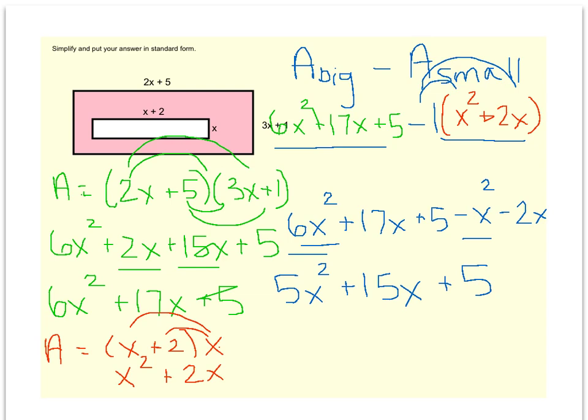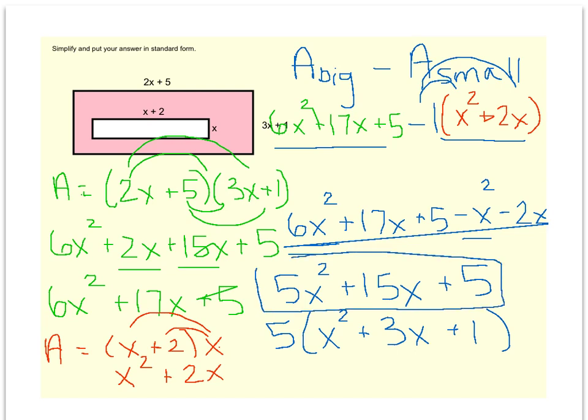This would be a perfectly acceptable answer, but many of you might recognize I can take out a GCF. I could divide out a 5 from all three of those terms. So if I took out a 5, I'd be left with x squared plus 3x plus 1. We will practice much more of that later on in the algebra unit. At this point, this would be a great answer. That would be the area of the shaded region of the picture.